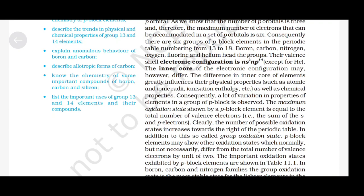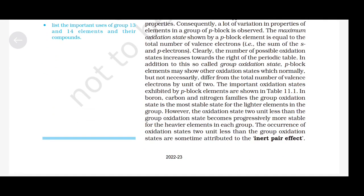Consequently, a lot of variation in properties of elements in a group of P-Block is observed. The maximum oxidation state shown by a P-Block element is equal to the total number of valence electrons — the sum of S and P electrons. The number of possible oxidation states increases towards the right of the periodic table. In addition to the group oxidation state, P-Block elements may show other oxidation states which normally differ from the total number of valence electrons by a unit of 2. The important oxidation states exhibited by P-Block elements are shown in table 11.1.